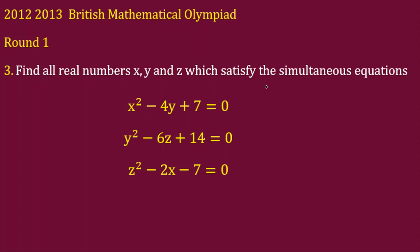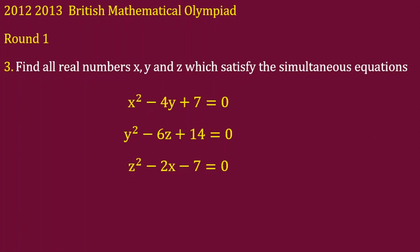It says find all real numbers x, y, and z which satisfy the simultaneous equations: x squared minus 4y plus 7 equal to 0, y squared minus 6z plus 14 equal to 0, z squared minus 2x minus 7 equal to 0. Now, we want to work on this problem.